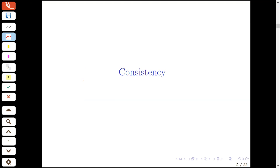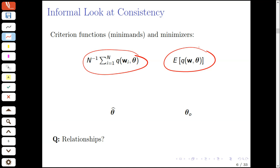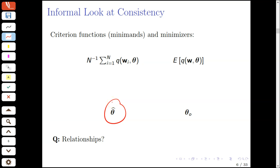Before getting too caught up in the mathematics, let's do an informal look at consistency. I've gathered the elements of our framework here. In the top row are the various criterion functions — the objects we're minimizing — in the sample and population respectively. In the bottom row are the M-estimator and M-estimate, what we're trying to estimate. What are the relationships between these variables, and can we establish further relationships between the four of them?